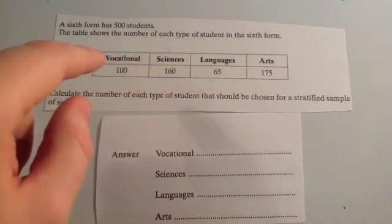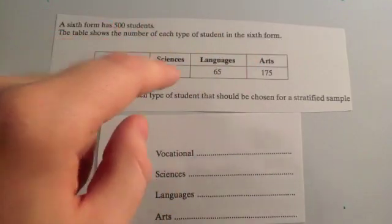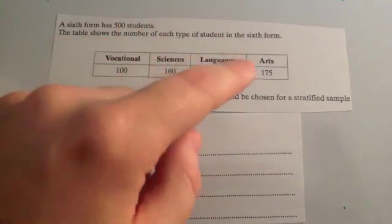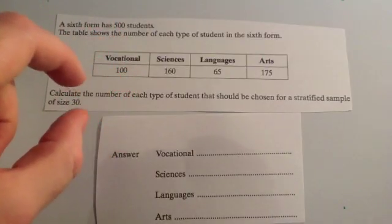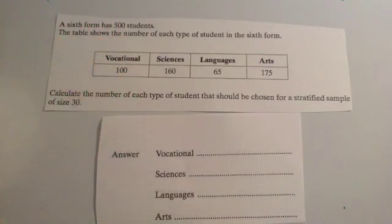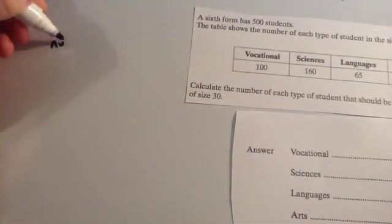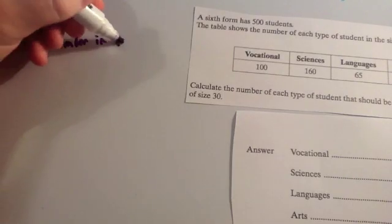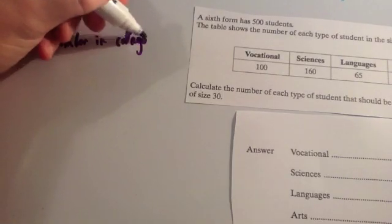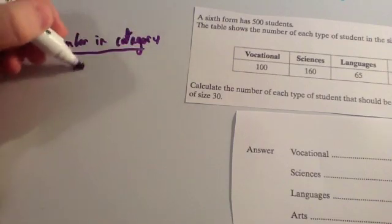What we're going to do is work out what fraction of the 500 are in each individual subject, and then take that fraction of the sample size. The way you do it: you take that number in the category over the total number of students — that's the fraction.